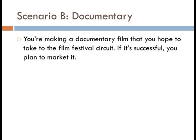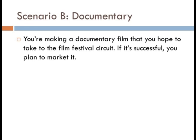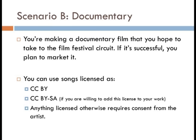Scenario B is a documentary. You're making a documentary film that you hope to take to the film festival circuit, and if it's successful, you plan to market it. The licenses suggested are Creative Commons Attribution and Creative Commons Attribution ShareAlike, if you're willing to add that license to your work. Non-commercial was not recommended due to potential marketing. Anything licensed otherwise would require consent from the artist. And you can market things that have a ShareAlike license on them. Is that correct, Elliot? Yes.